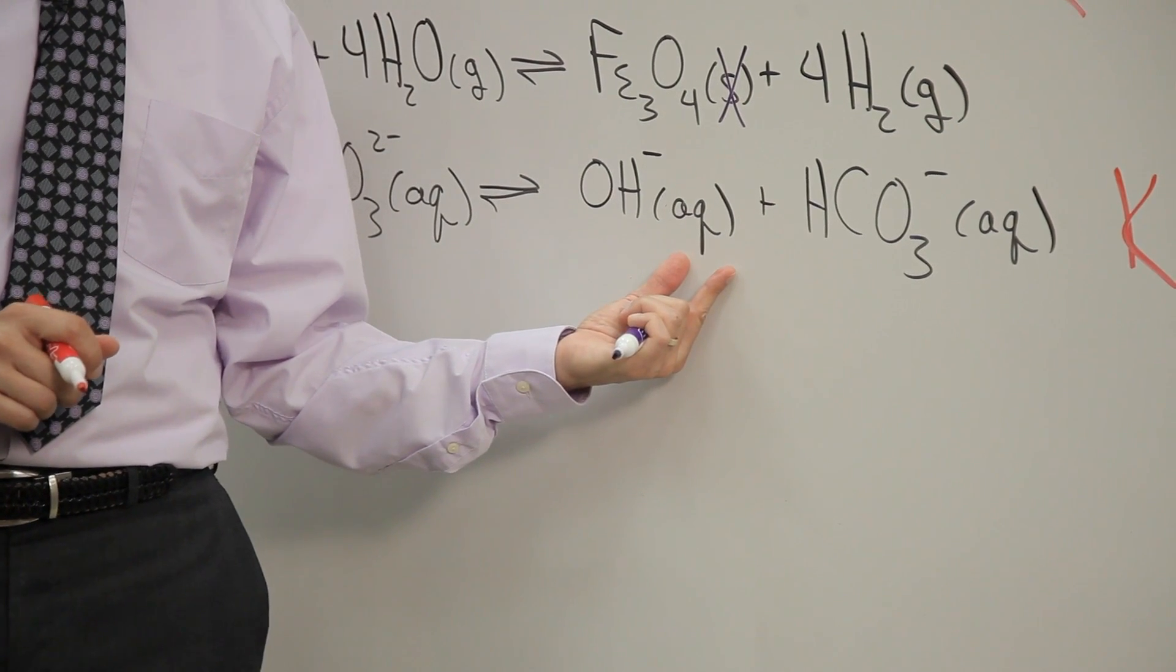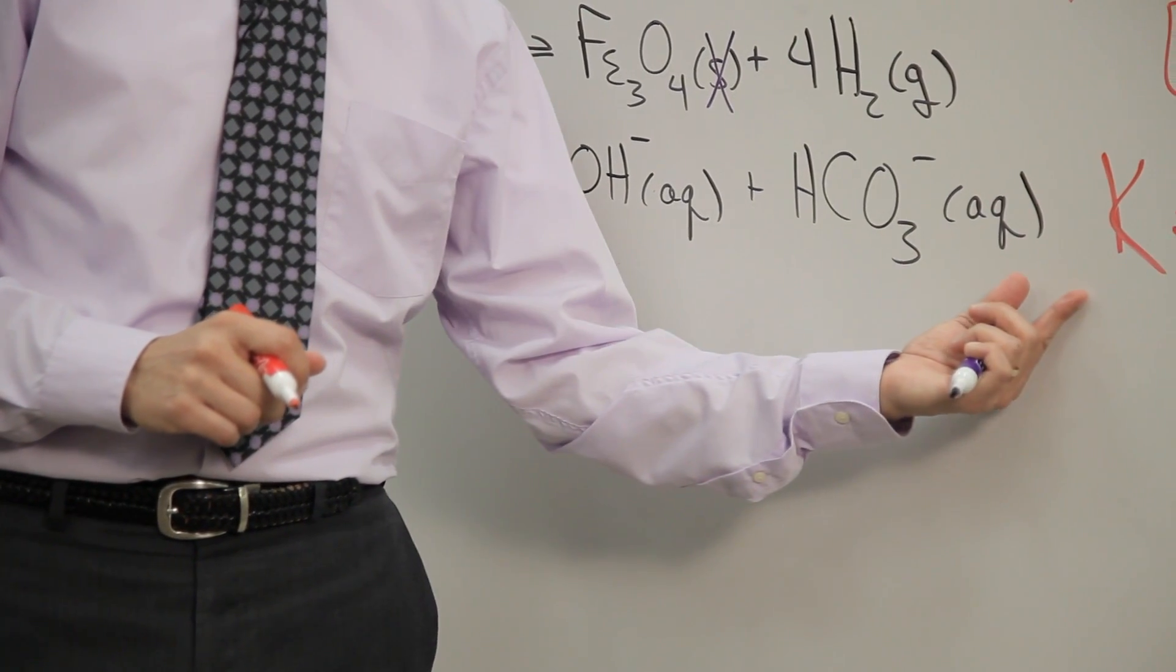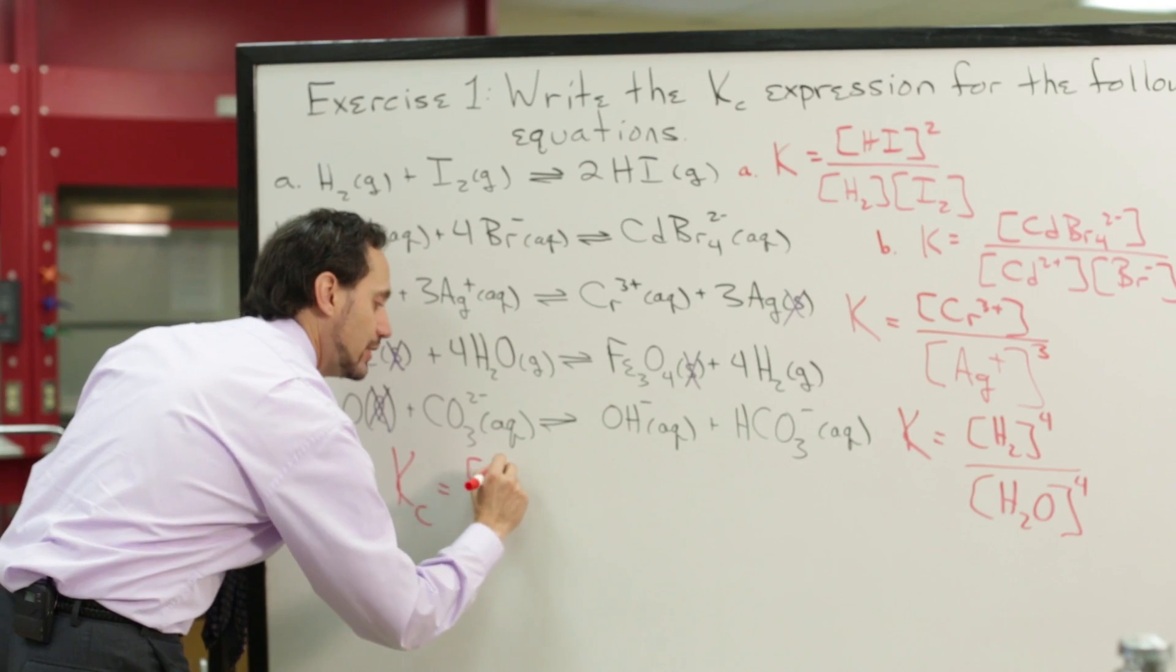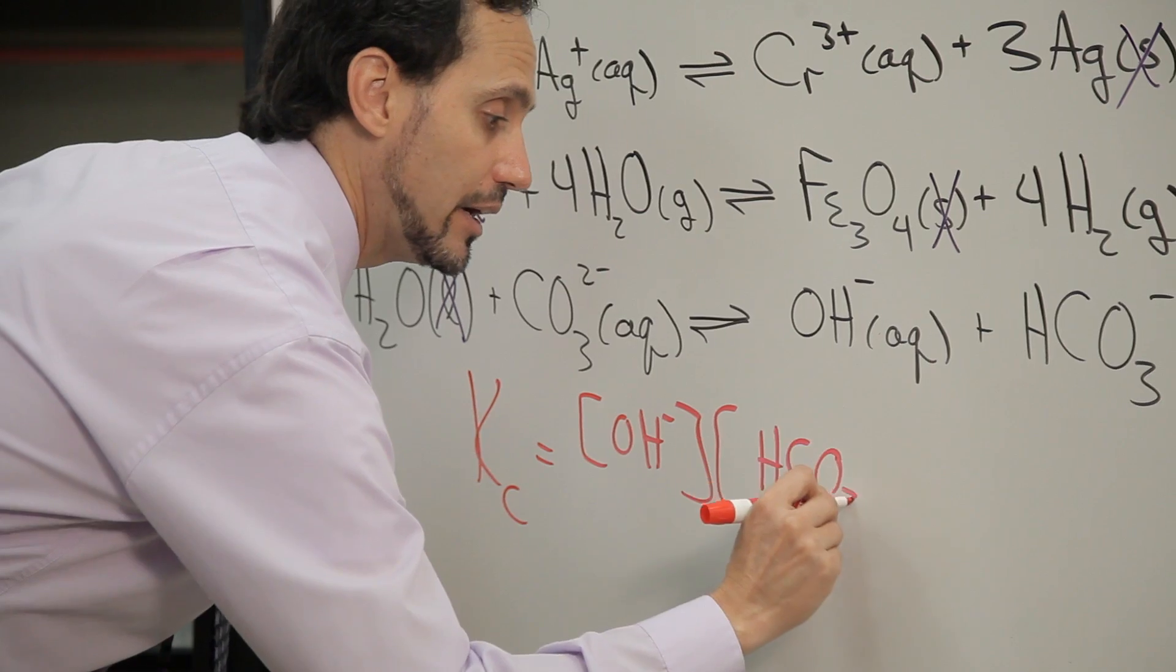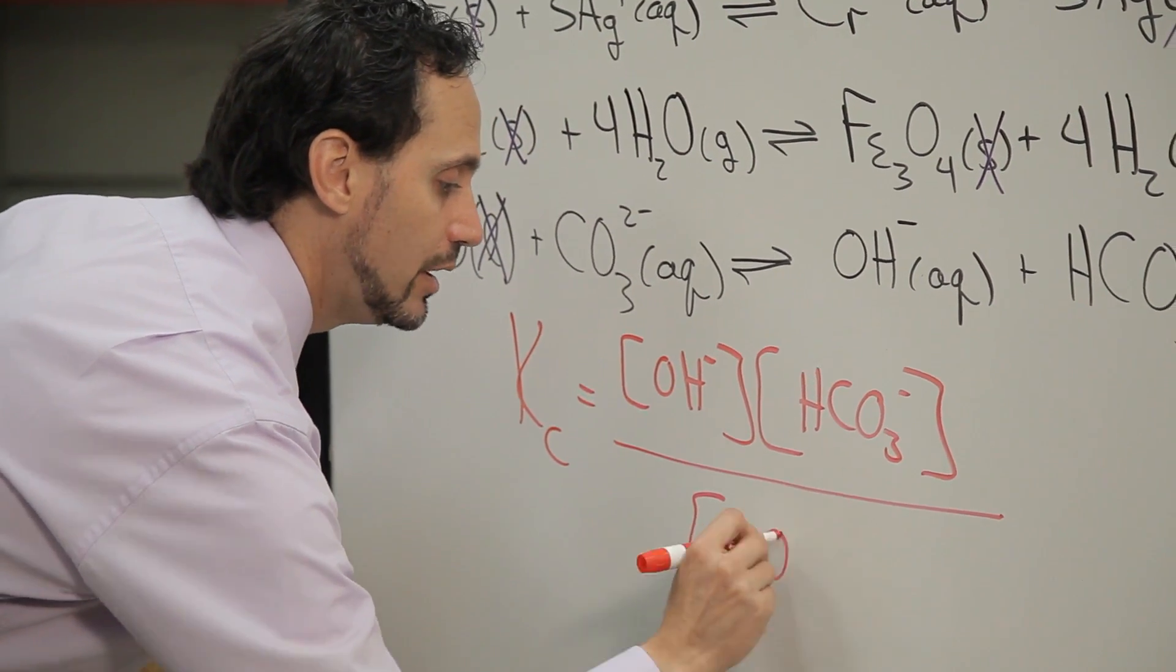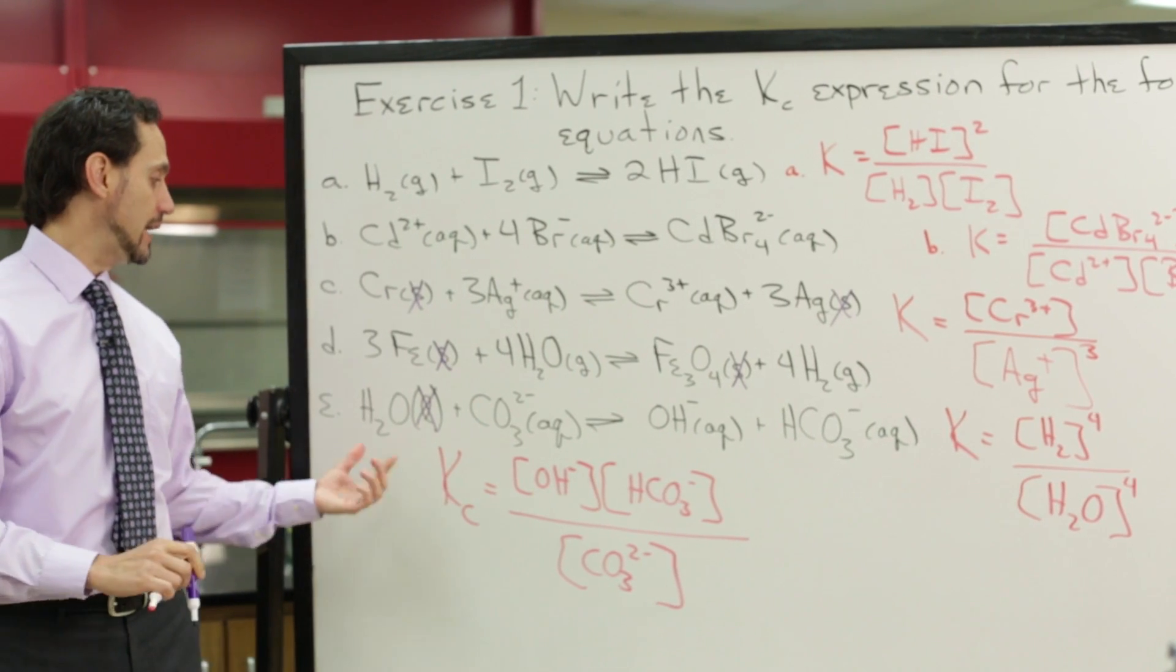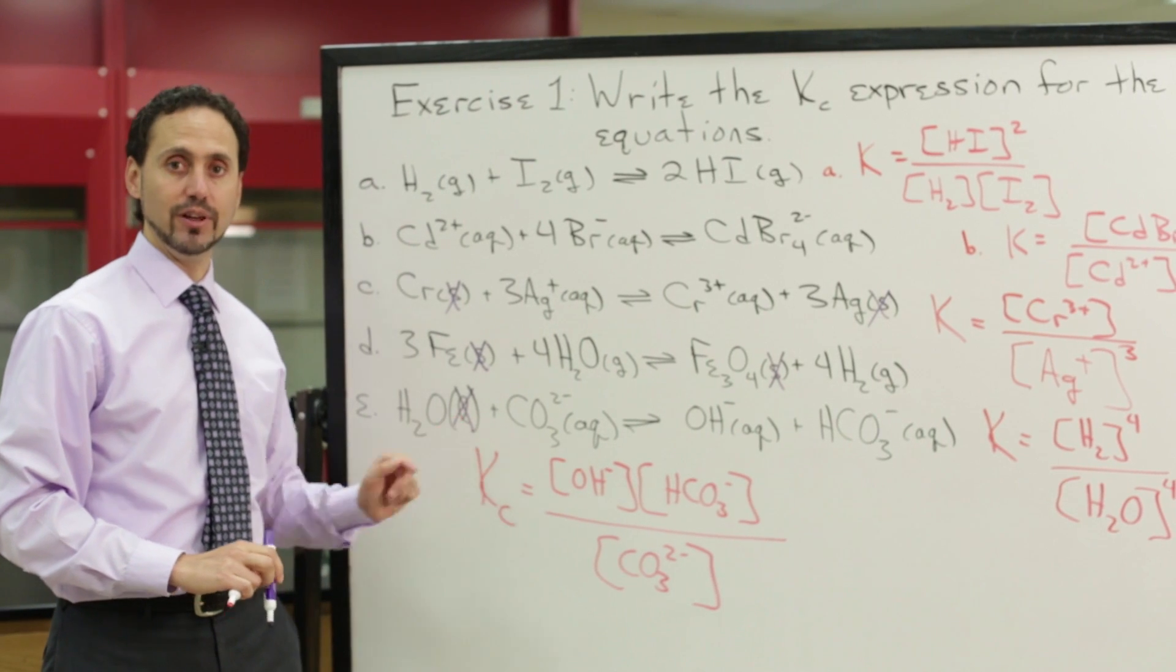So the equilibrium constant expression would be the concentration of the hydroxide ion times the concentration of the bicarbonate ion divided by the concentration of the carbonate ion all to the first power because there are no coefficients. And again, liquid water does not appear in the denominator because it's in the liquid phase.